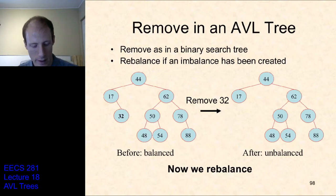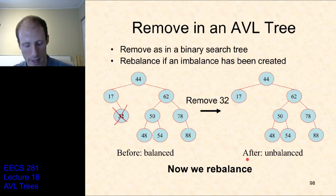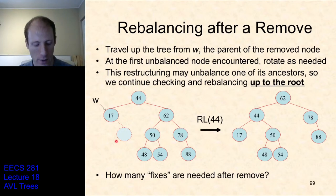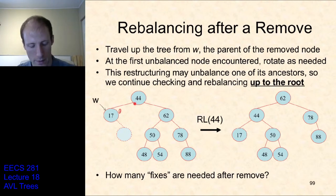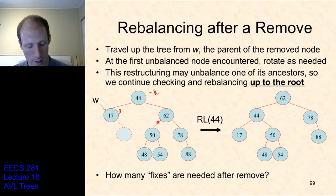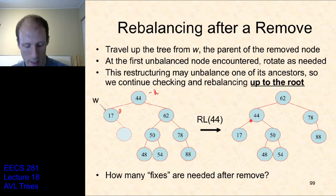Here is an AVL tree that is balanced. Now we're going to remove 32 from the tree. Afterwards we have become unbalanced — the root 44 has a balance factor of -2. So we need to do a single rotate left at the root. When we do that, 62 becomes the new root, 44 becomes its left child, 62 hangs onto its right subtree, 44 hangs onto its left subtree, and the subtree in the middle gets shuffled from being connected to 62 to being connected to 44.